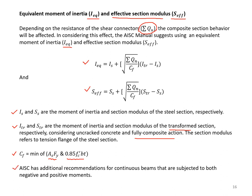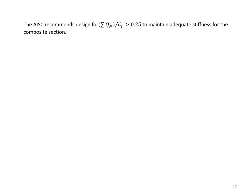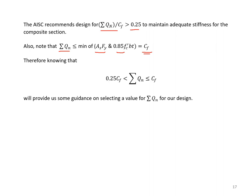AISC also has additional recommendations for continuous beams subject to both negative and positive moments — please consult the AISC manual for those cases. AISC recommends designing for the ratio sigma-QN over CF larger than 0.25 to maintain adequate stiffness. Note that sigma-QN cannot exceed CF, and must be at least 0.25 times CF. This inequality provides guidance on selecting sigma-QN values for design.